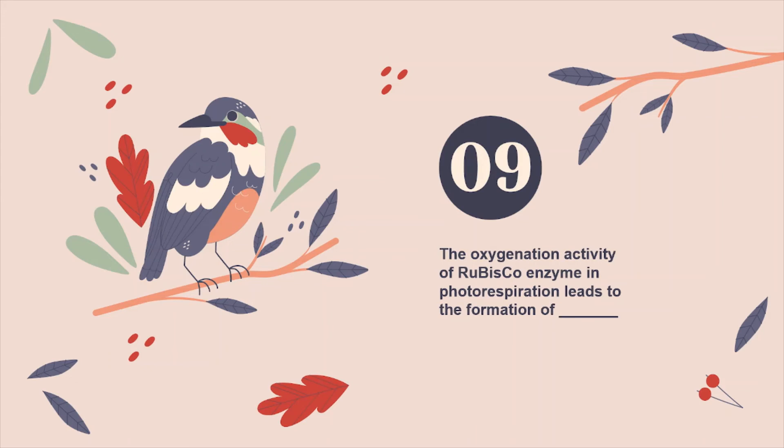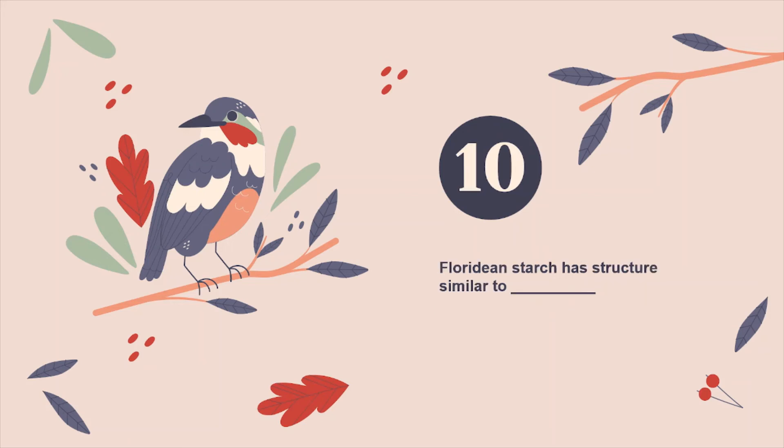Ninth: the oxygenation activity of rubisco enzyme in photorespiration leads to the formation of ___. Tenth: the pluridine starch has looked just similar to ___. So these were all 10 questions which were asked in the entrance examination for the BSc MSc Integrated course.